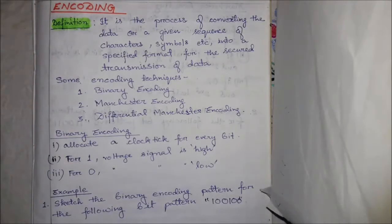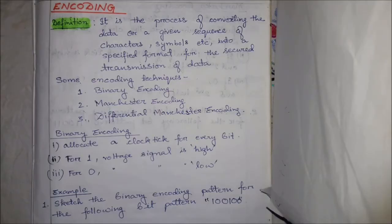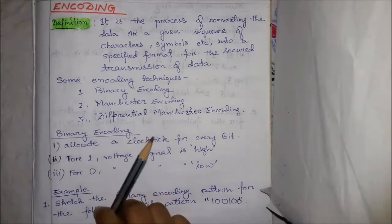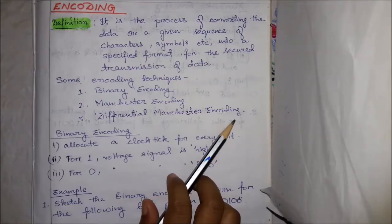Hello everyone. Today we are going to see encoding. Encoding is the process of converting the state of data from one form to another. Encoding ensures secure transmission. Today we are going to discuss three encoding techniques: binary encoding, Manchester encoding, and differential Manchester encoding.